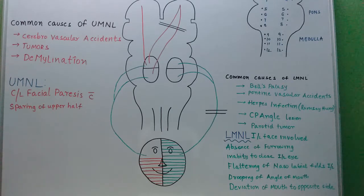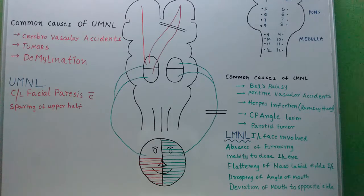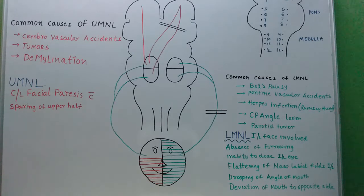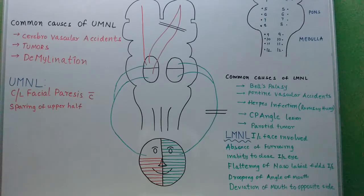Going deeper into upper motor neurons: upper motor neurons cross the midline before entering the nucleus. So there will be opposite side — contralateral — involvement for upper motor neuron lesions. Whereas for lower motor neurons, there is no crossing, so there is ipsilateral side involvement for lower motor neuron lesions.